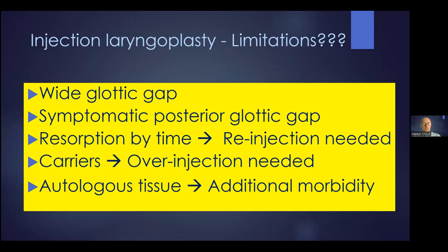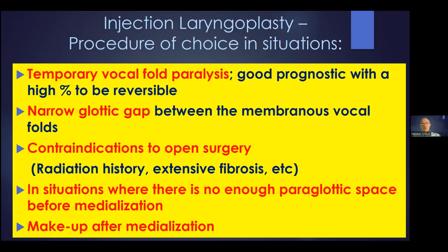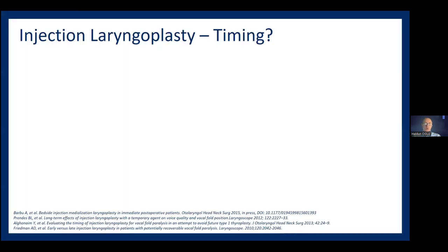Injection laryngoplasty has limitations if the patient has a wide glottal gap. If there is a symptomatic posterior glottal gap, it is resorbed over time, so there is a need for re-injections. Depending on the material used, you always need an over-injection, and if you use autologous tissue, there is additional morbidity for the donor site. However, it may be the procedure of choice for temporary vocal fold paralysis, narrow glottic gaps, contraindications to open surgery such as radiation or extensive neck fibrosis, or when paraglottic space extension before medialization or makeup after medialization is needed.